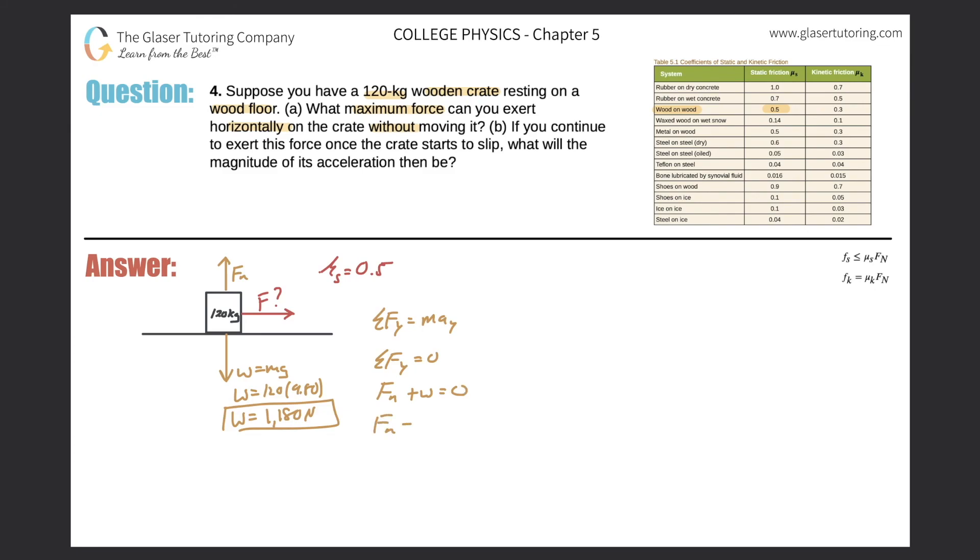So it's the normal force minus the 1,180 is equal to zero. And then just add this term on over. So that's why the normal force is 1,180. All right, so now that that's taken care of.